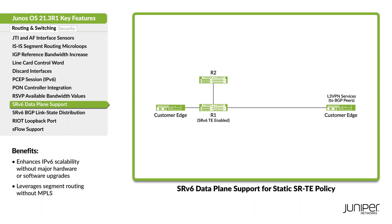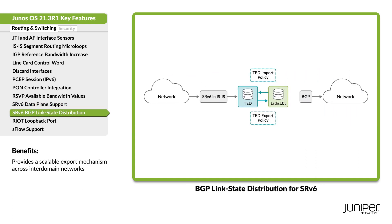For service providers whose networks are predominantly IPv6 without MPLS, configure static SRTE tunnels over an SRv6 data plane. Export the SRv6 topology information to the SDN controllers through BGP LS extensions or an IGP domain.